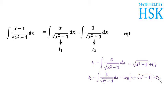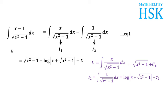Now placing the values of i1 and i2 into equation number 1, with the two integral constants c1 and c2 replaced by a single constant c, the final answer for the integral of (x minus 1) upon under root of (x squared minus 1) with respect to x is: square root of (x squared minus 1) minus log of (x plus under root of (x squared minus 1)) plus c.